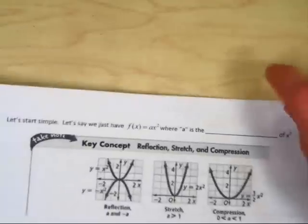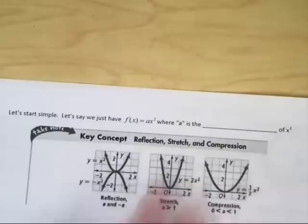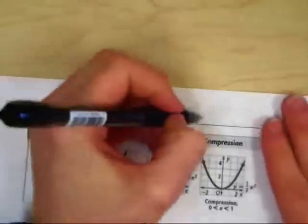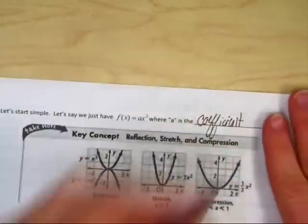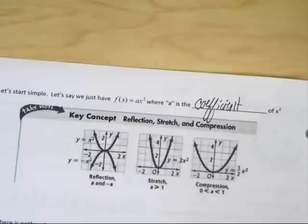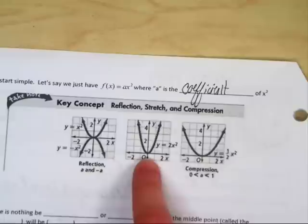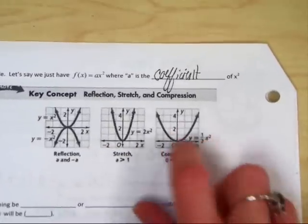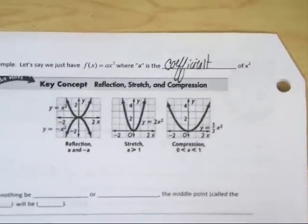We're going to start very simple. Let's say we have f of x equals ax squared. Notice there's nothing else, where a is simply the coefficient of x squared. If a is negative, it goes upside down. If a is bigger than 1, it gets very skinny, and that's called a vertical stretch. And if a is between 0 and 1, it gets kind of fat. It looks like it's been stepped on. That shouldn't be new to you. You should remember that. That's the same thing as absolute values.